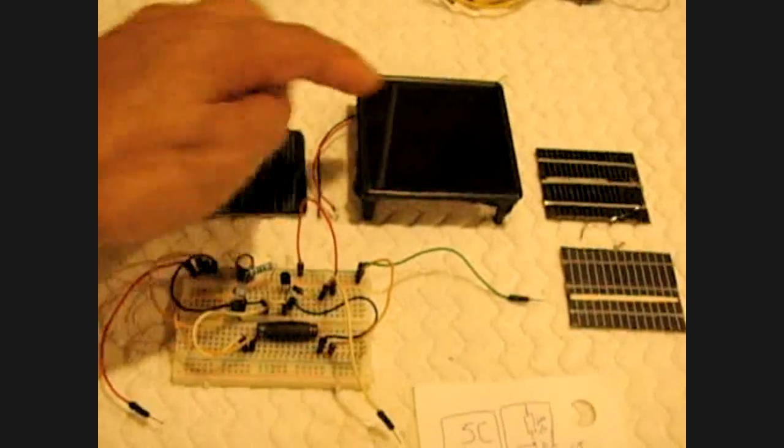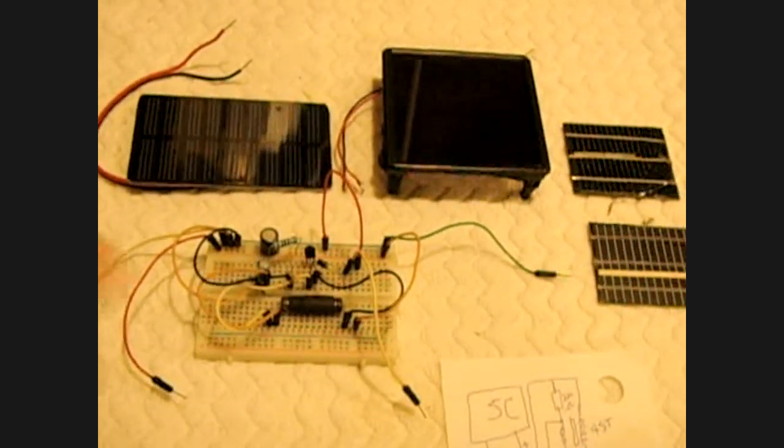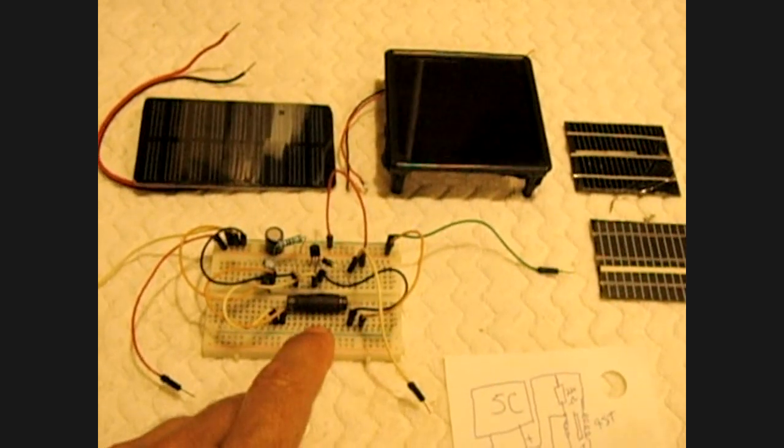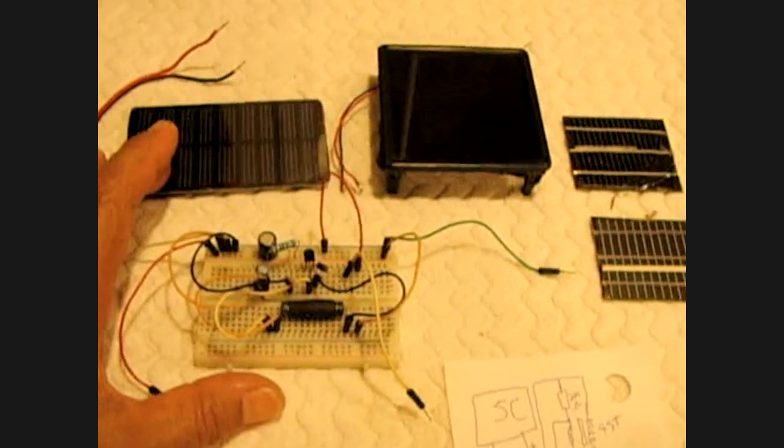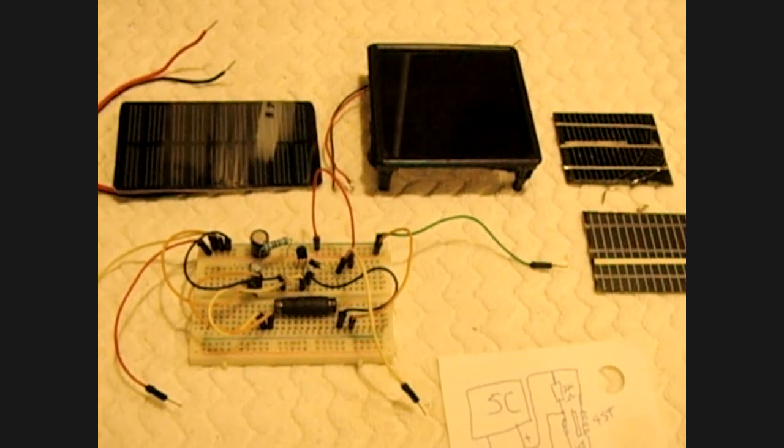These are low current, 200 milliamps, and this is maybe 80 or 100. What this circuit does is it allows you to take a small panel like this and use it to charge a 12 volt battery, a lead acid battery.